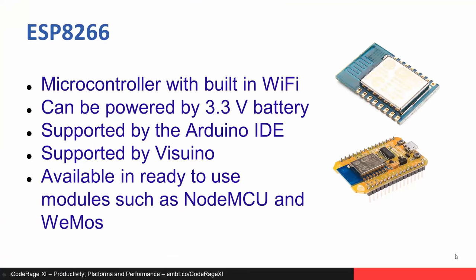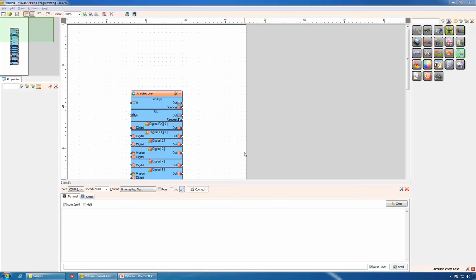In addition to Arduino, Visuino also supports the ESP8266 microcontroller. It has built-in Wi-Fi, is low cost, very small — about the size of a coin — and can be powered by a 3.3V coin battery. It is supported by the Arduino IDE and Visuino, and there are a number of ready-to-use USB-enabled modules including NodeMCU and WMOS. For this project, we will use the NodeMCU version.